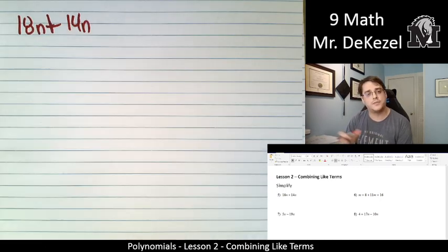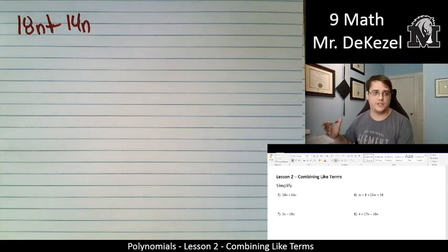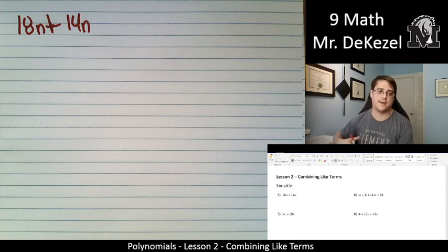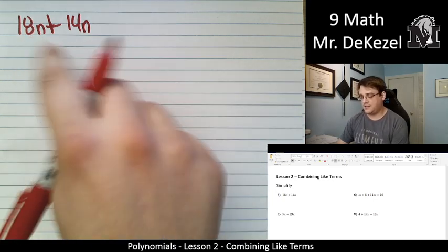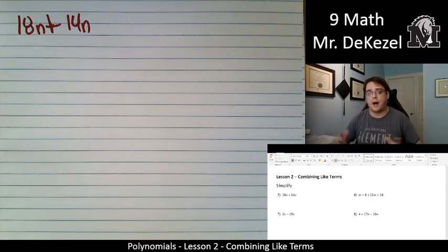In all our other problems in the previous lesson, they are different values for the exponent. We had x to the power of 2 and x. Those are different. But since this is 18n's and 14n's, we can go ahead and combine these two and add them up.